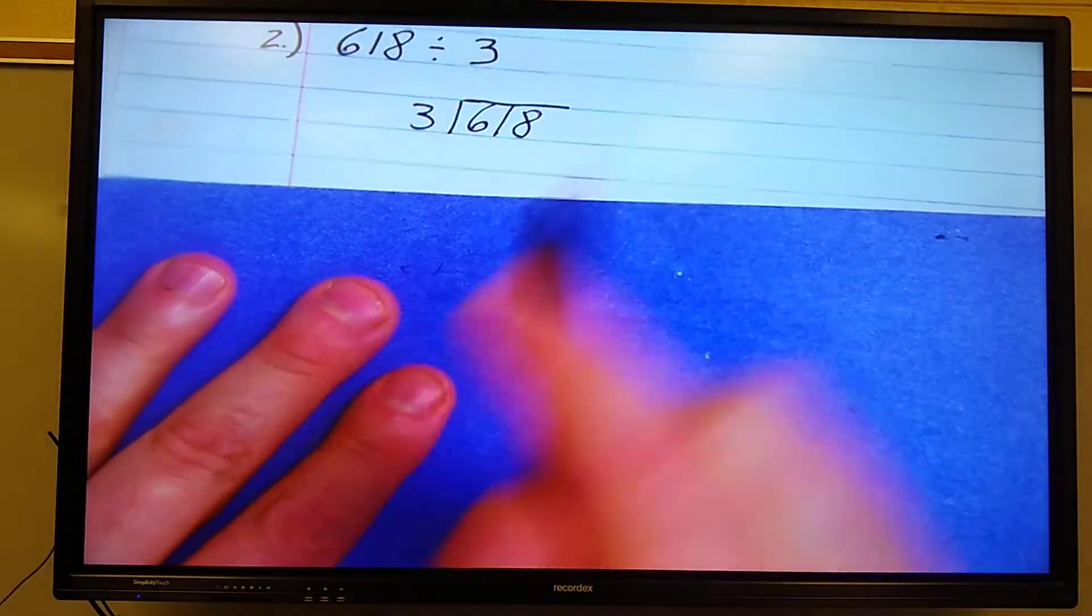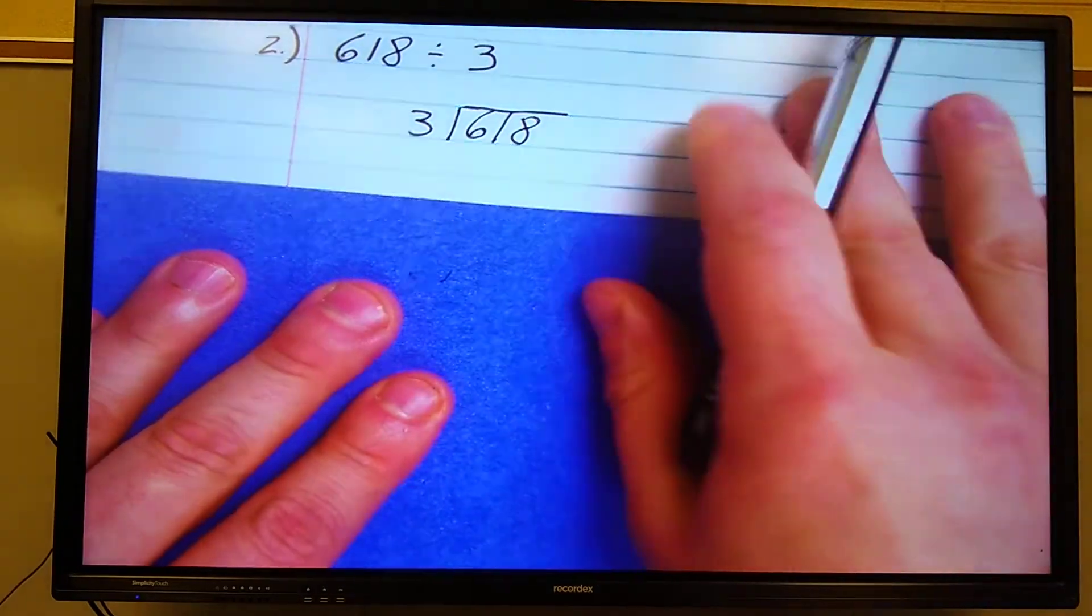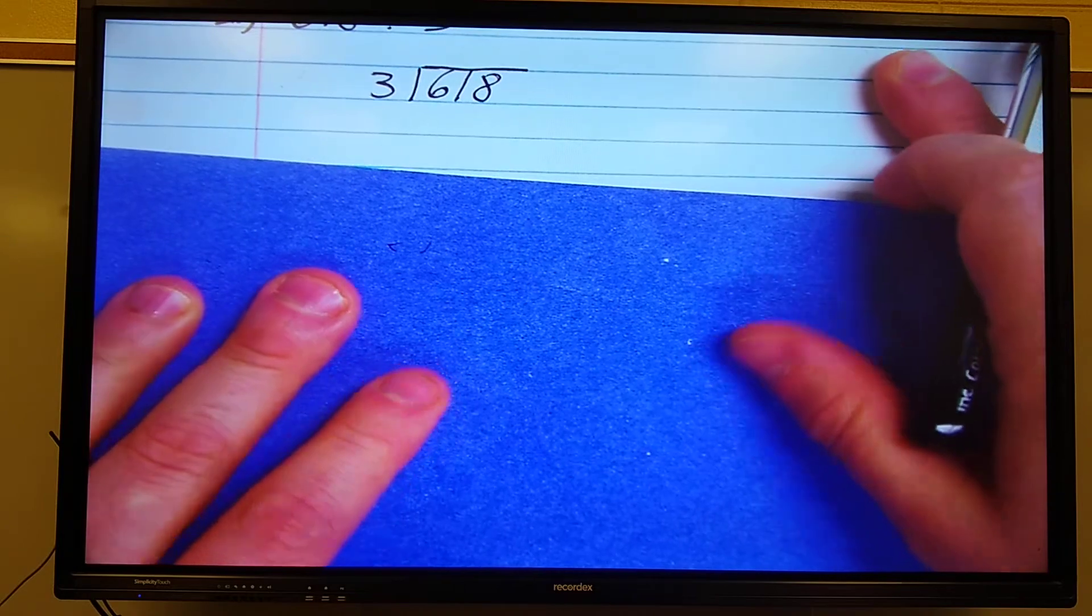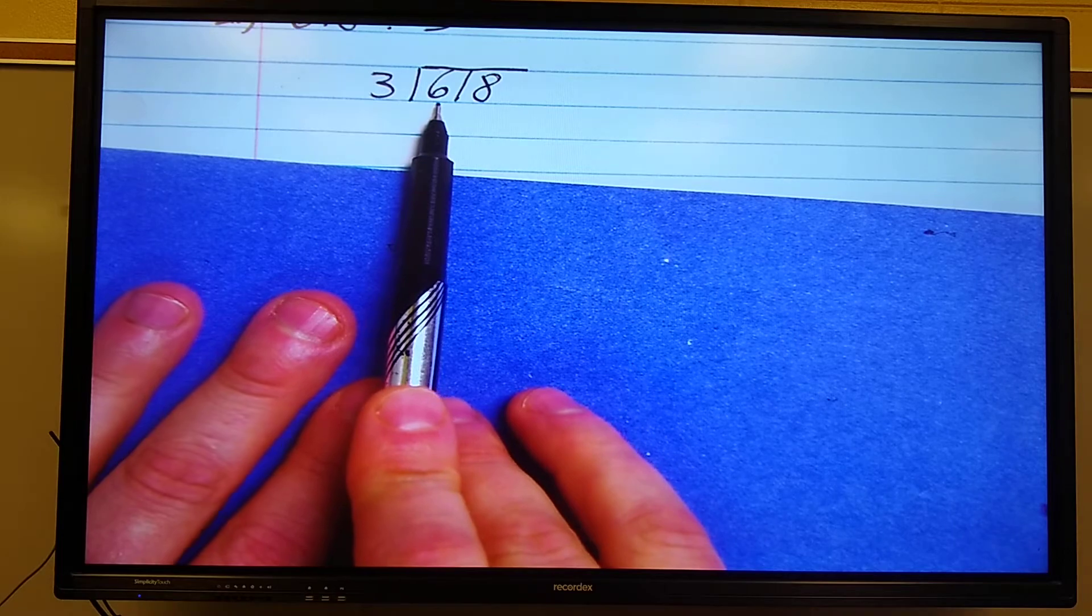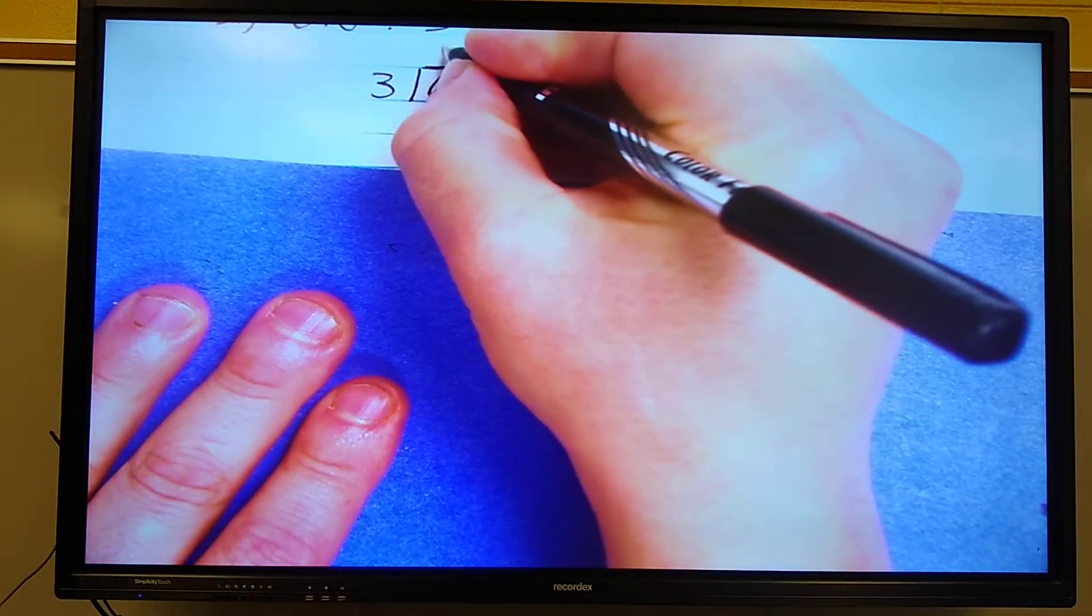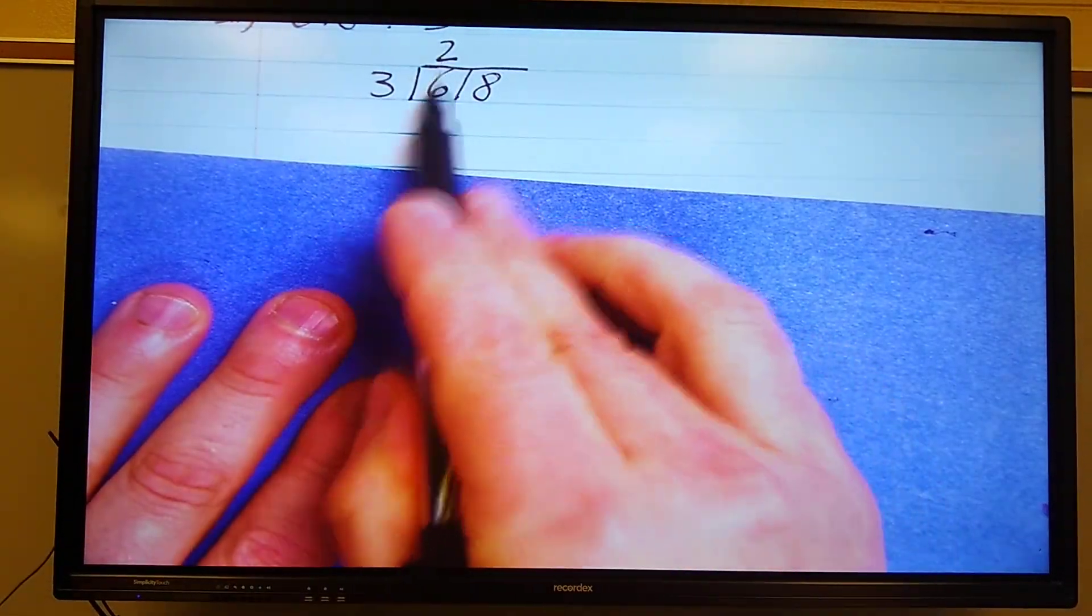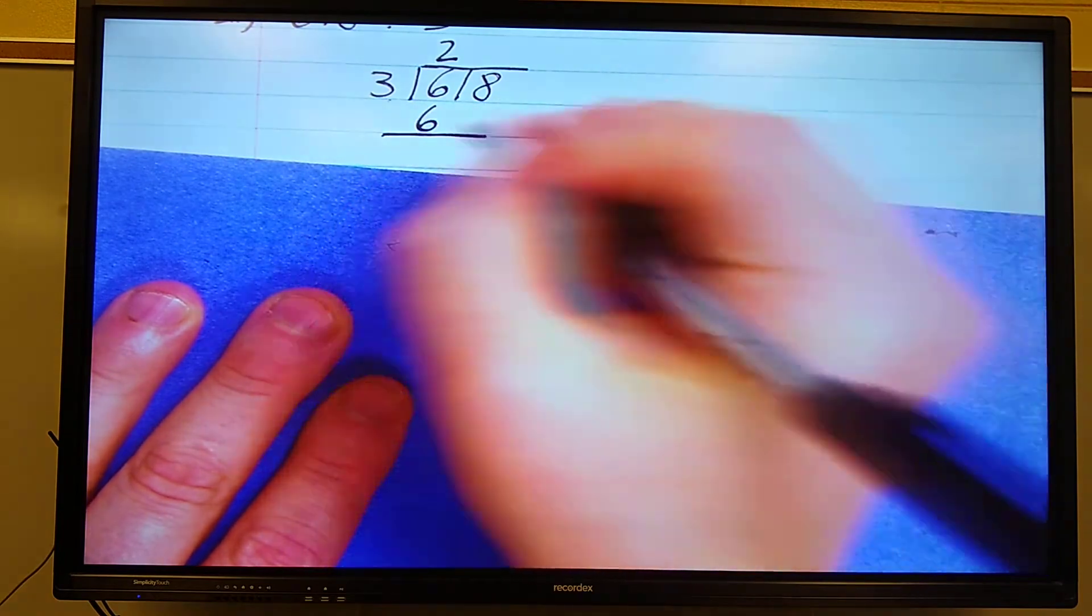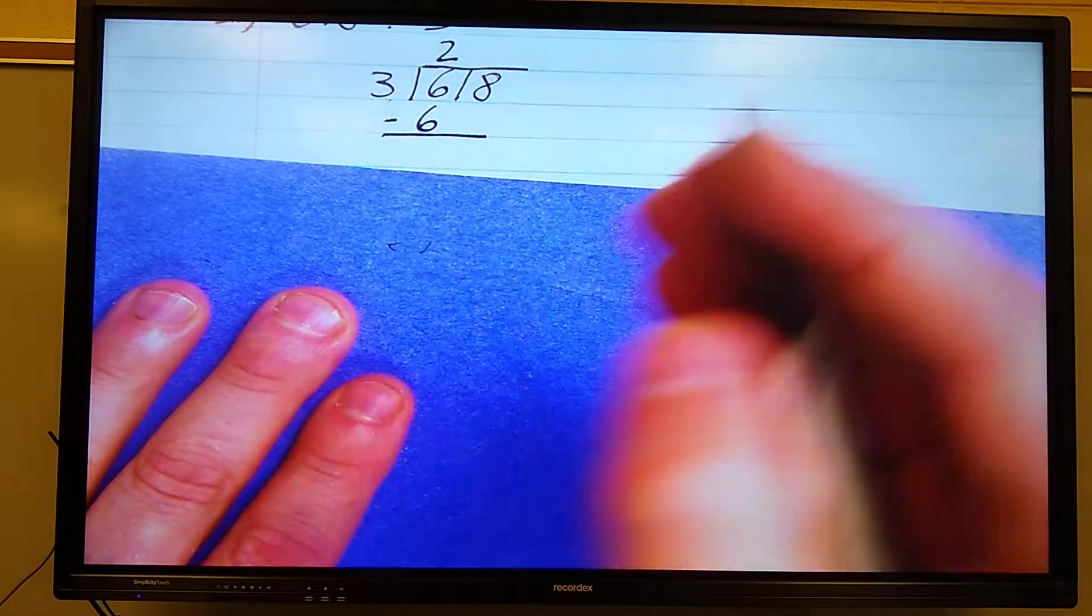Remember, the dividend goes inside the division bar, the divisor goes outside the division bar. My first step is to divide. Can 3 go into 6? Yes it can. How many times? 2 times. So I divide it into 6. So my 2 is going to go above the 6. 2 times 3 is 6. That's multiply. My next step is to subtract. 6 minus 6 is 0.